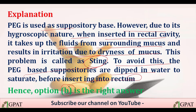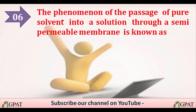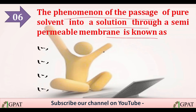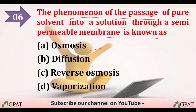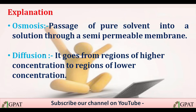The next question: the passage of pure solvent into a solution through a semi-permeable membrane is known as? Options are: option A osmosis, option B diffusion, option C reverse osmosis, option D vaporization. The correct answer is osmosis.